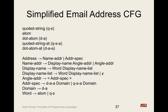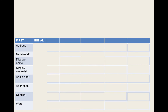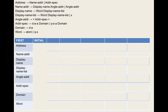If this shows up on a test and it says calculate the first and follow sets of this grammar, everyone should be able to do that. We're going to go over it today. The first thing we need to do is show that this grammar actually supports a predictive parser; to do that, we need to calculate both first and follow sets.